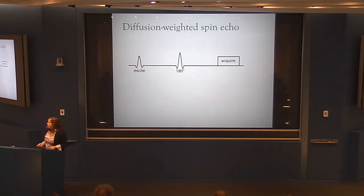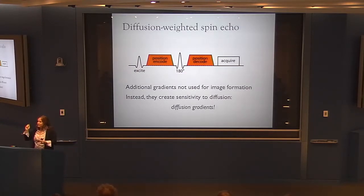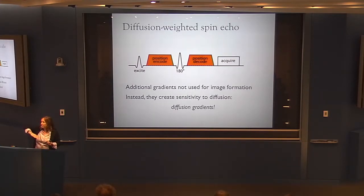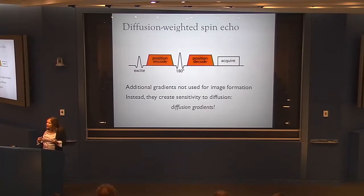To turn the spin echo into a diffusion-weighted image, we introduce additional gradients — two gradient pulses, one on each side of the 180-degree pulse. These create a linear variation in the main magnetic field. Normally gradients encode the image itself; here they create sensitivity to diffusion. We call them diffusion gradients.